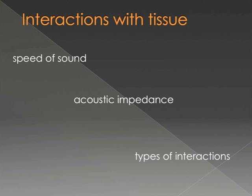To summarize: we talked about the speed of sound as it travels through tissue and how the speed is dependent on the tissue type. We talked about the acoustic impedance, and how two tissues with different acoustic impedances form an interface between them. And that's where many of the types of interactions, like reflection, happen within the tissue.